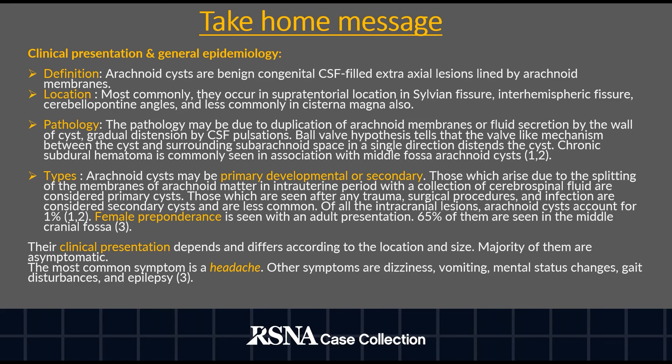Chronic subdural hematoma is commonly seen in association with middle fossa arachnoid cysts. The types of arachnoid cysts are primary (developmental, due to splitting of membranes occurring in the intrauterine period) and secondary (due to trauma, surgical procedures, or infection) — secondary arachnoid cysts are very rare. Female preponderance is seen in adult presentation. Clinically they present with headache being the most common symptom, or they may be purely asymptomatic when small.